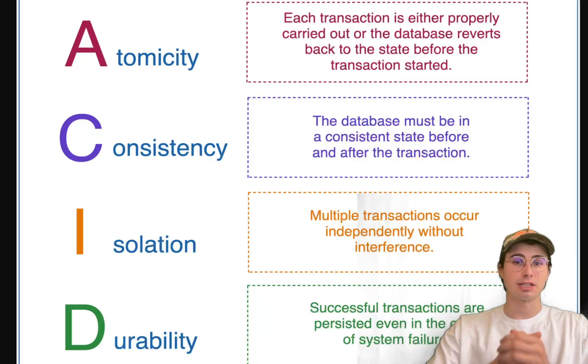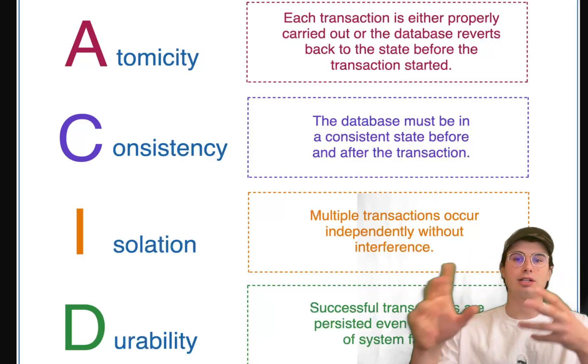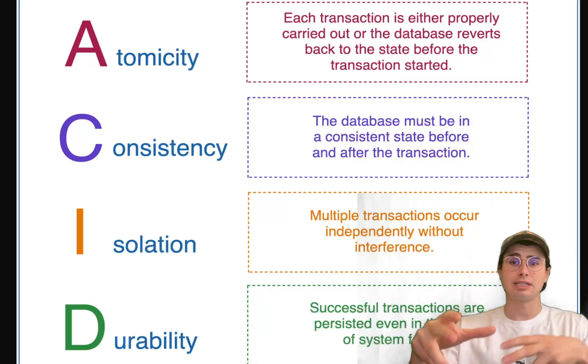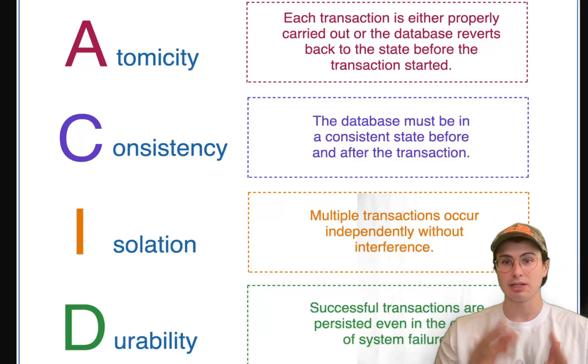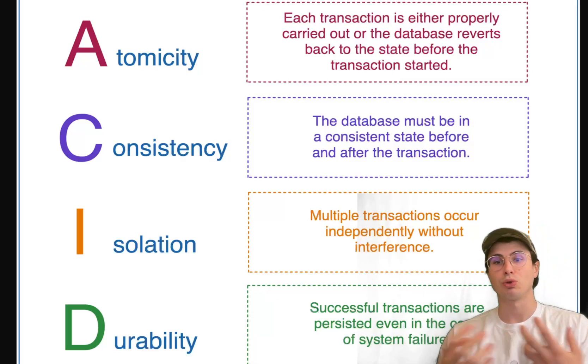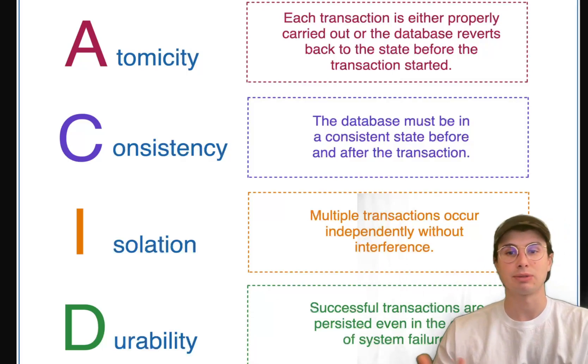Then third, you have isolation, which is ensuring that concurrent transactions occur without leading to data inconsistencies. And what that means is that each transaction needs to be isolated from each other, making it appear as if it is the only one interacting with the database.